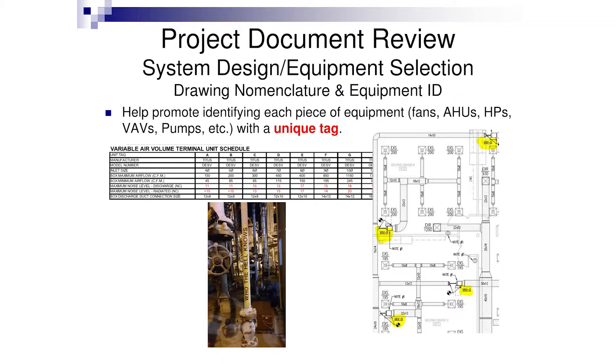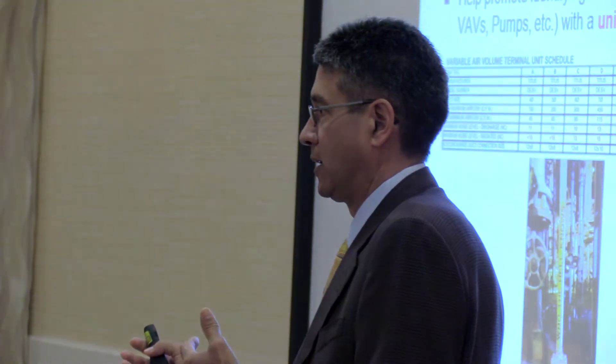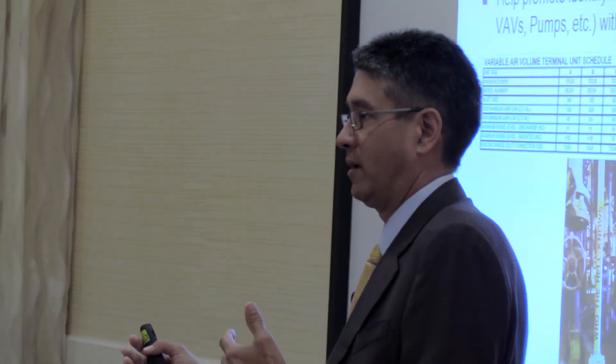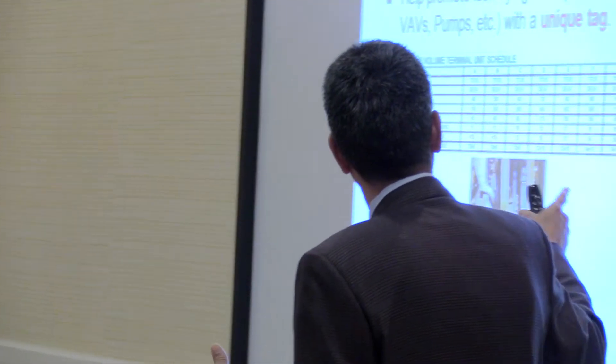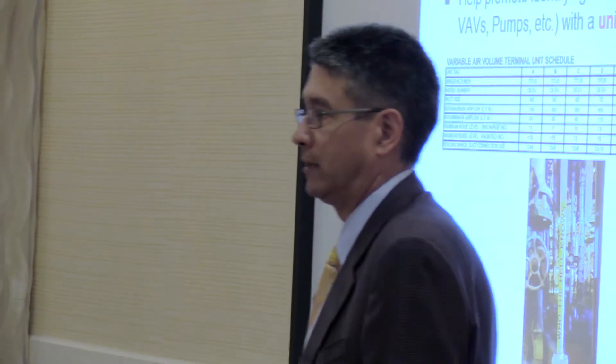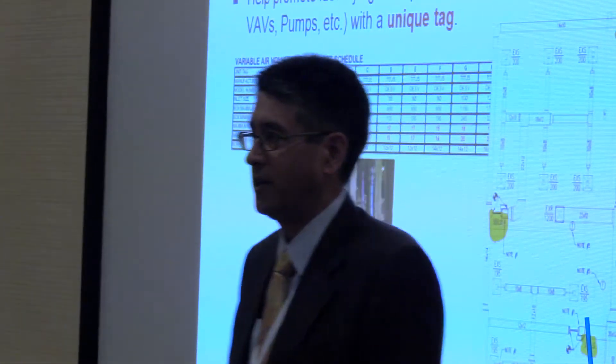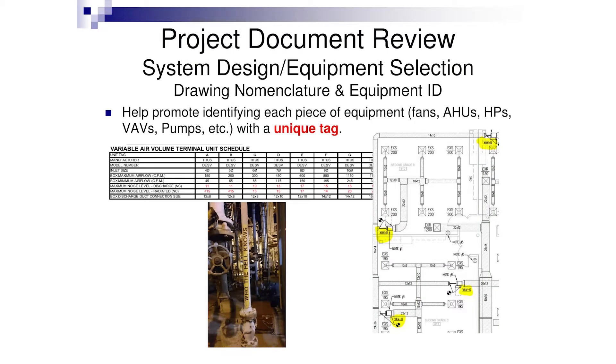One of the things that helps both commissioning, test and balance, and owner usage in the end is unique tags and IDs. When you get to a job and all of a sudden there are five VAV groups not individually identified, it becomes very difficult in the communication process throughout the project. Talking to the controls guy and saying 'VAVG northeast of room 111 isn't holding its calibration factor' — he gets turned around, doesn't know which one you mean. Typically the controls guy will call it by the thermostat room number, while the contractor labels it by where it's actually located, creating all kinds of different nomenclature going back and forth.